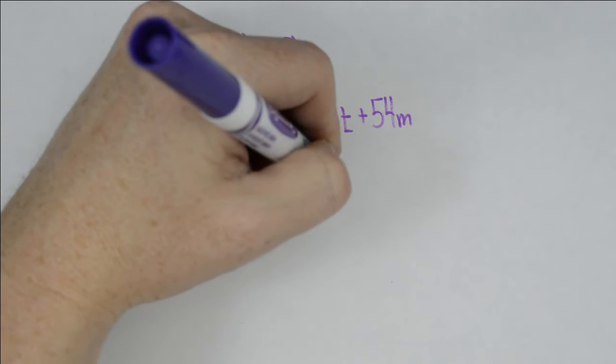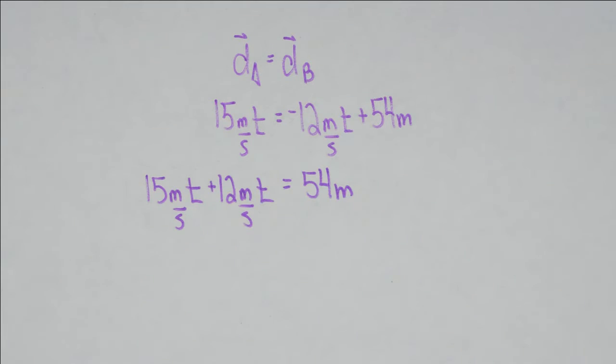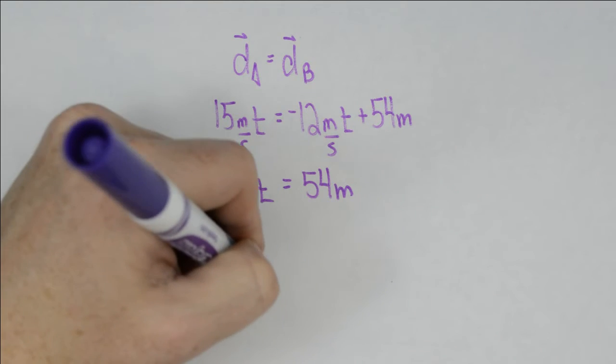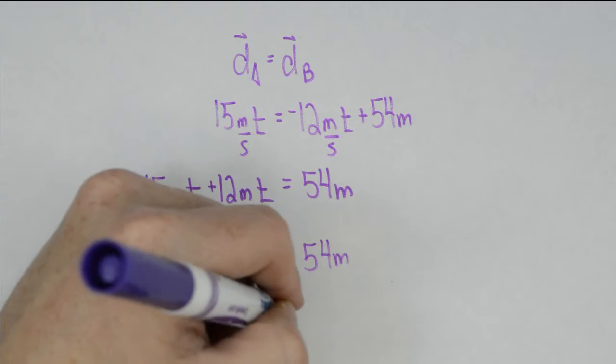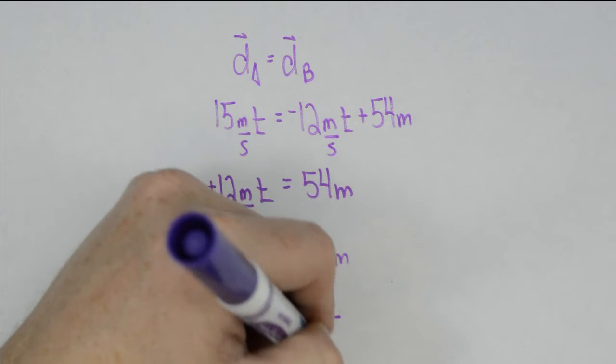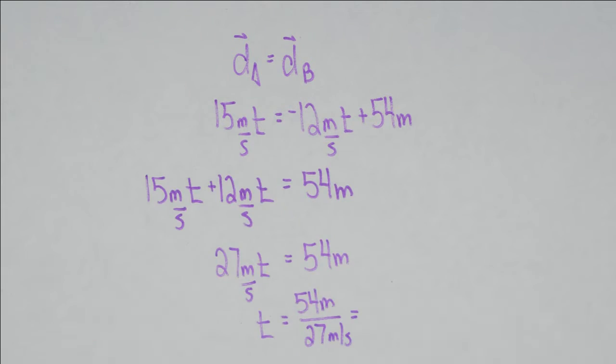At this point, we're left with some straightforward algebra. We combine our terms, and what we're able to do is isolate for time. And so time is going to be 54 meters divided by 27 meters per second, or two seconds.